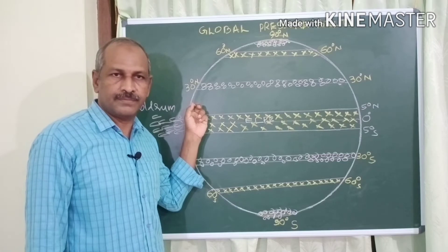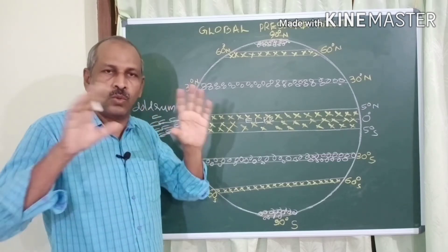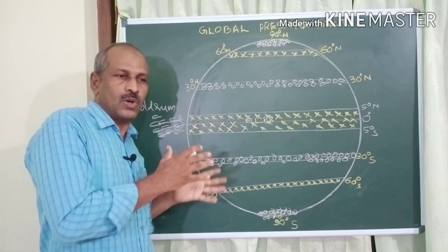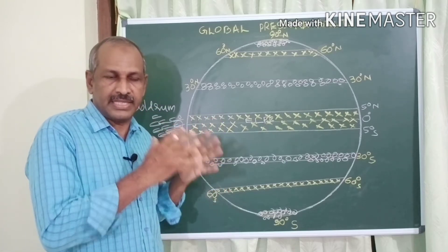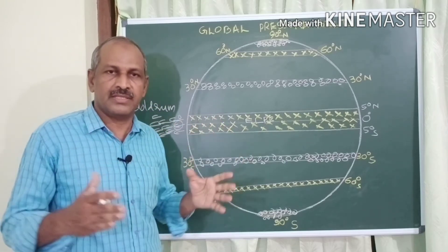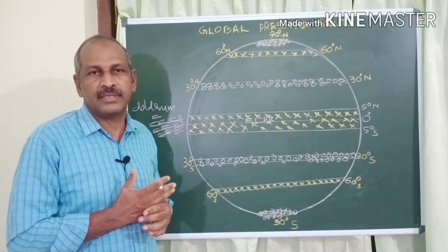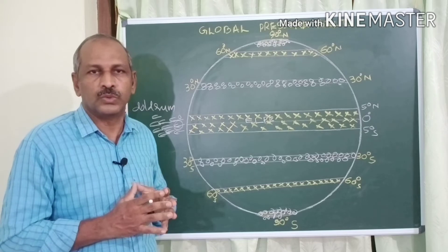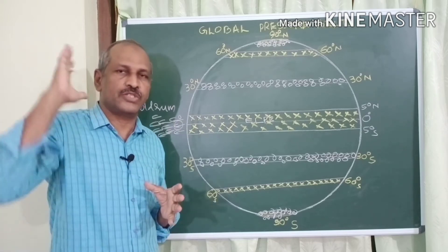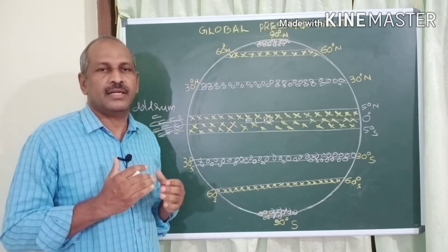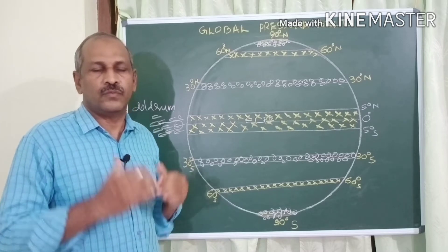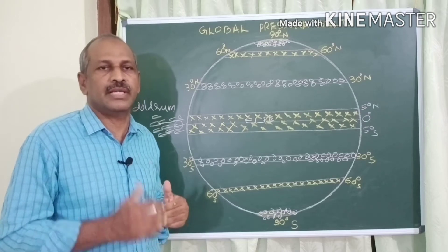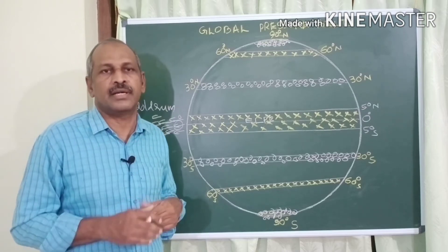This region is also called the Doldrums, meaning the zone with no wind — no horizontal air movement. The Doldrums were a nightmare for mariners in ancient times who navigated with sail ships, as they would be stranded with no wind to propel them.